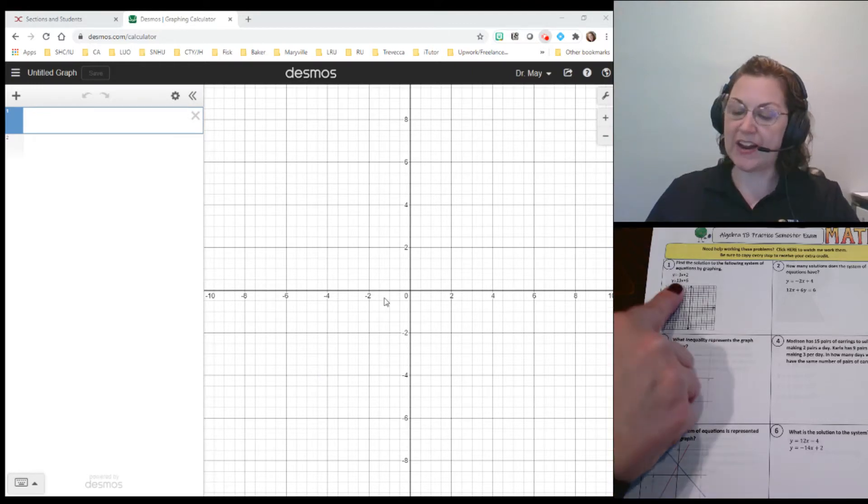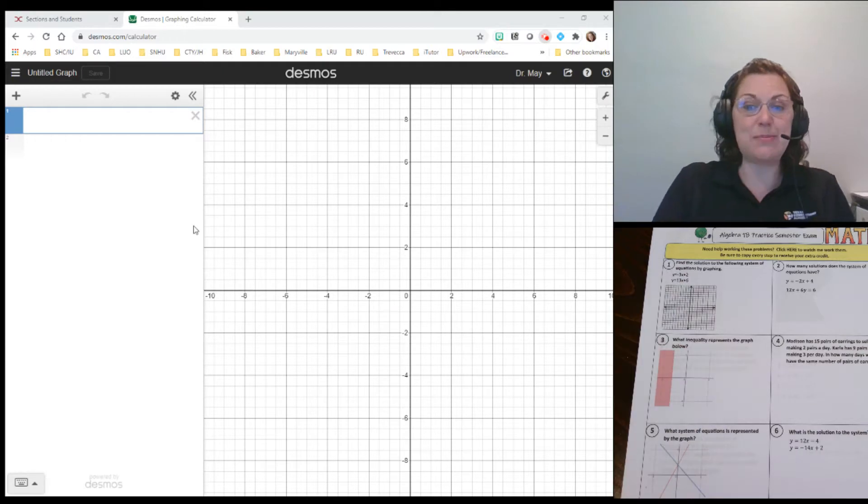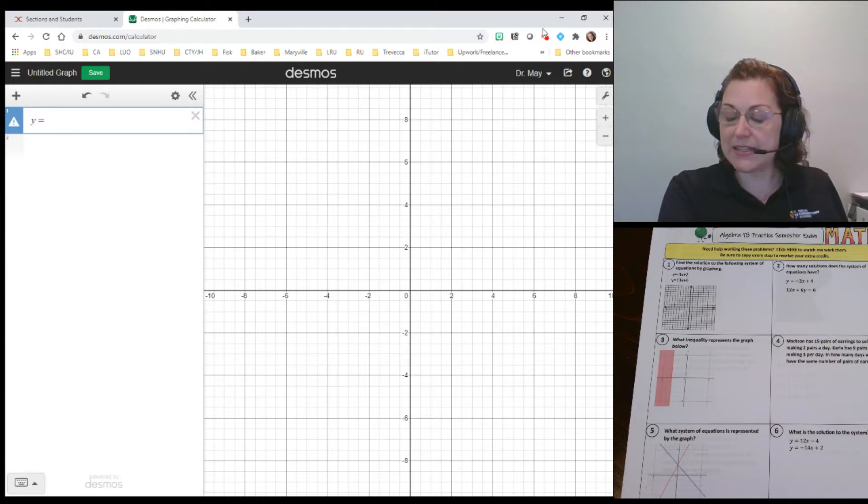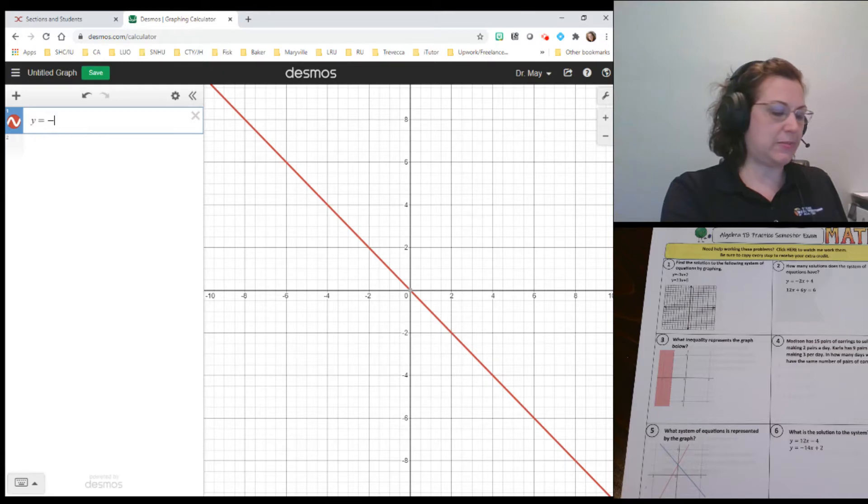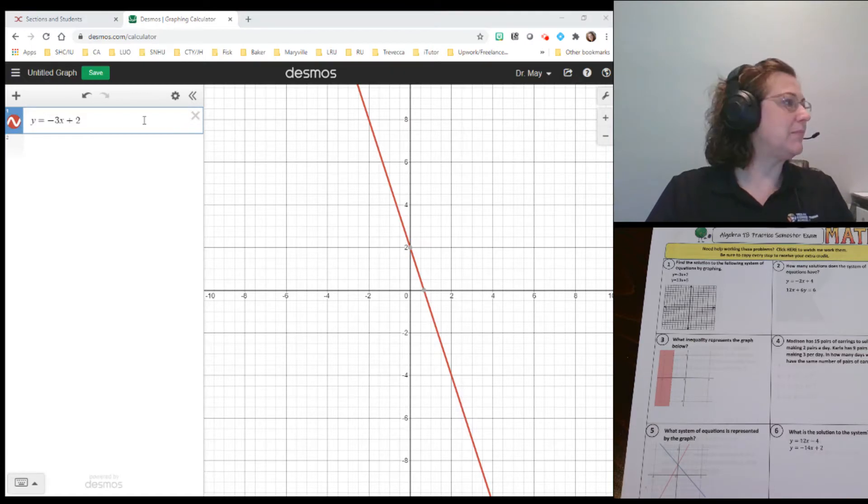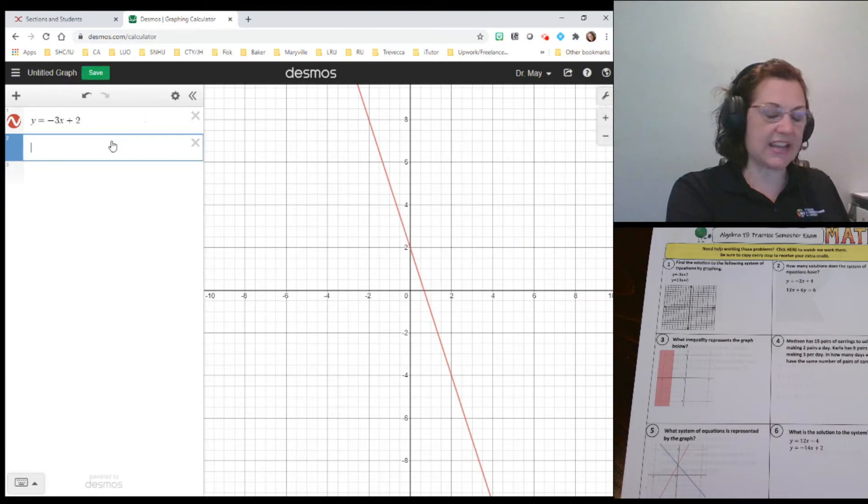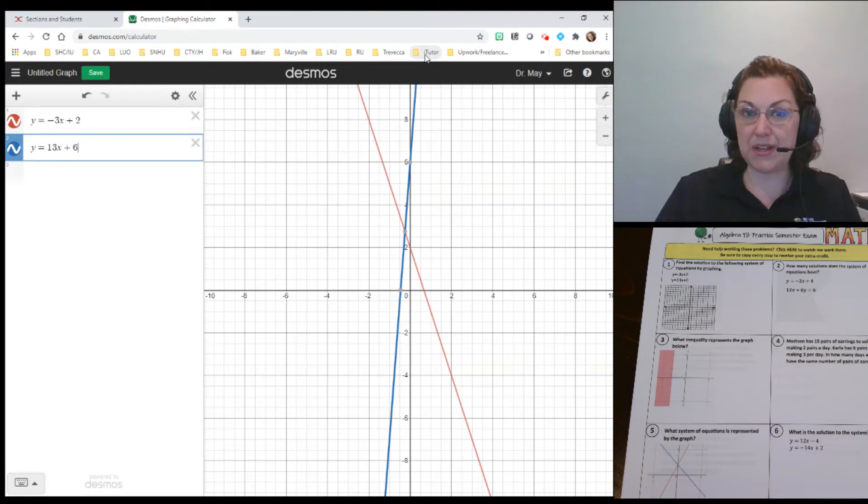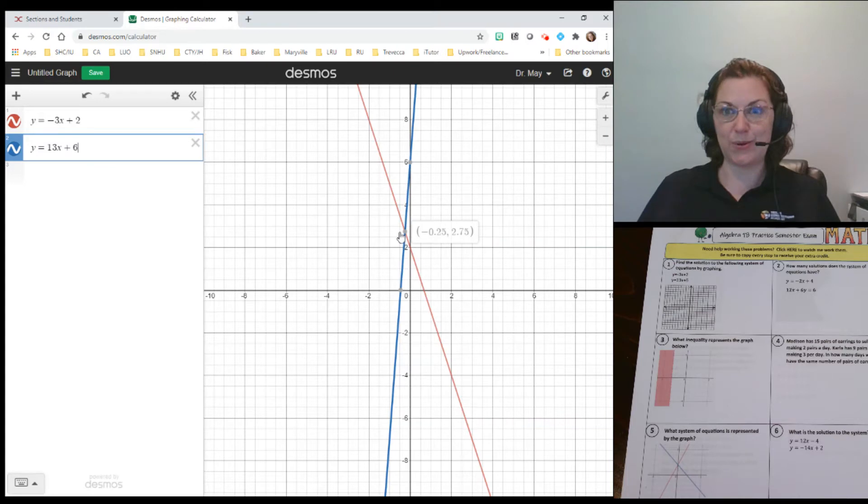We're going to look at problem number one and right off the bat, we want to use that Desmos graphing calculator. Let me switch our format here so that you can see it. I'm going to take number one and put these two equations into my Desmos graphing calculator. I'm just typing this with my keyboard: y equals negative 3x plus 2. There it is graphing for me. Then I'll press enter and type in that second one, y equals 13x plus 6. The beauty of Desmos is, do you see where those two intersect right there? If you hover over that point, Desmos will tell you where they intersect.